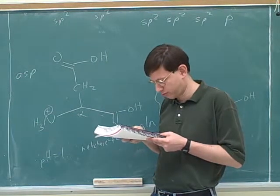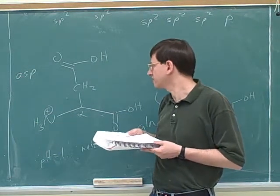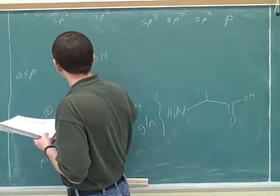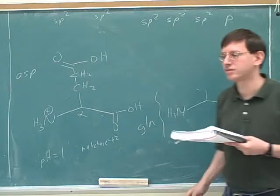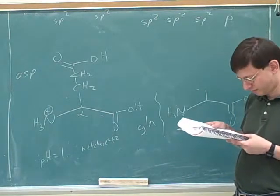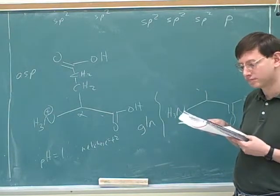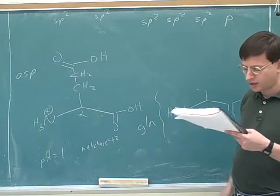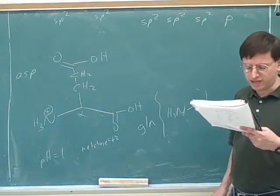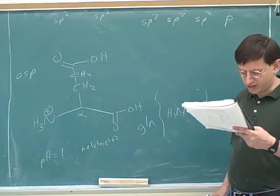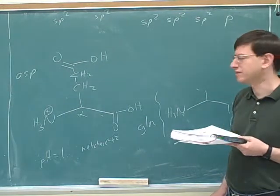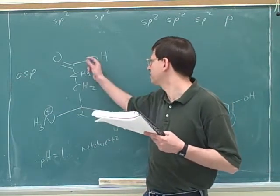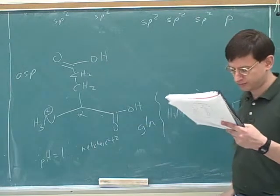And then glutamic acid — glutamic acid is exactly like aspartic acid except it has one more carbon in the side chain. Only proline in the table shows the entire amino acid; everything else just shows the side chain. So the COOH in the table for aspartic acid and glutamic acid is the side chain COOH.